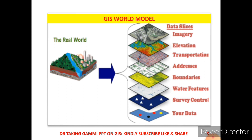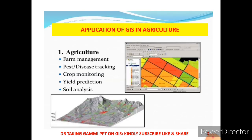On the left side you can see how the real world looks and how GIS-given information looks — how the imagery of the world looks, how the elevations, how the transportation, how to address it, and how the boundaries of these locations are, what are the places, and what are the service centers.